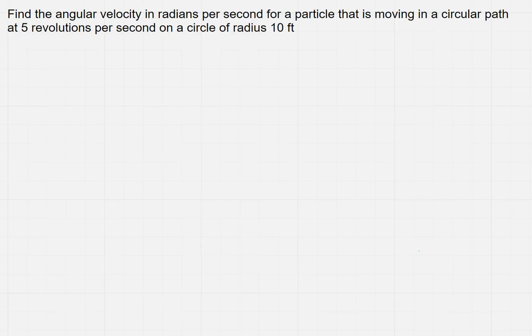We want to find the angular velocity in radians per second for a particle that is moving in a circular path at 5 revolutions per second on a circle of radius 10 feet.